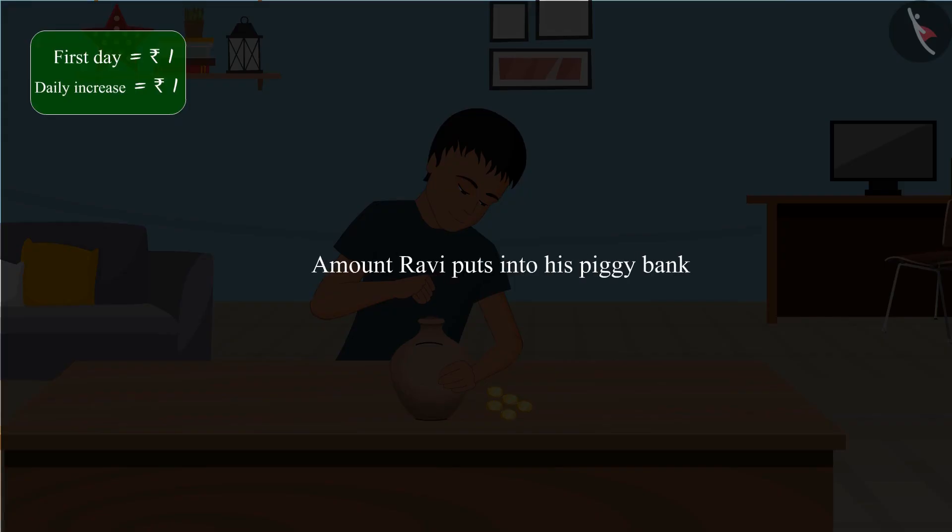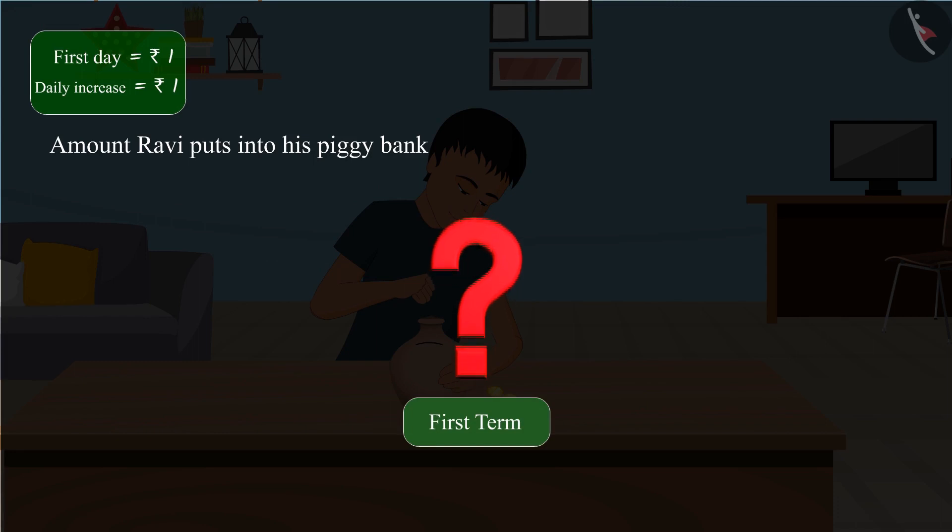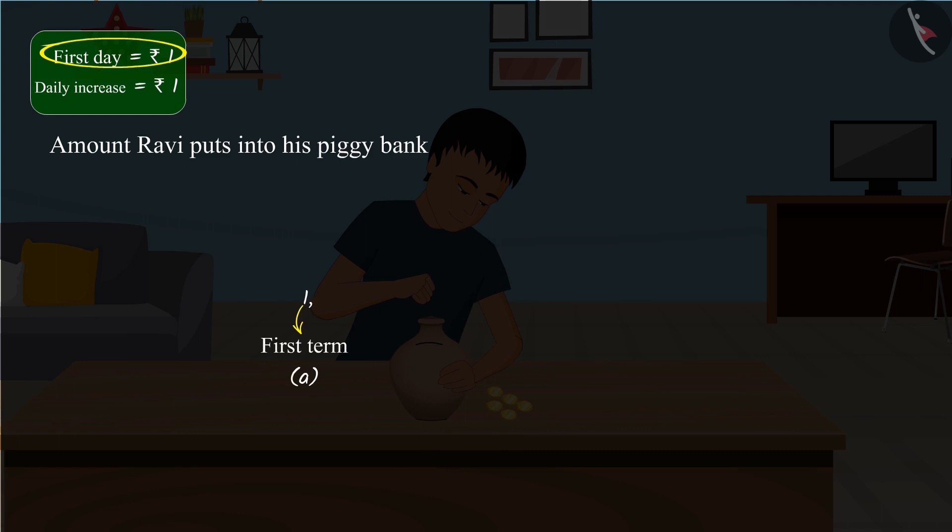For this, we have to make a list of the amount Ravi puts in his piggy bank every day. What will be the first term of the list? Absolutely right. The first term a will be 1 because he puts 1 rupee in the piggy bank on the first day.